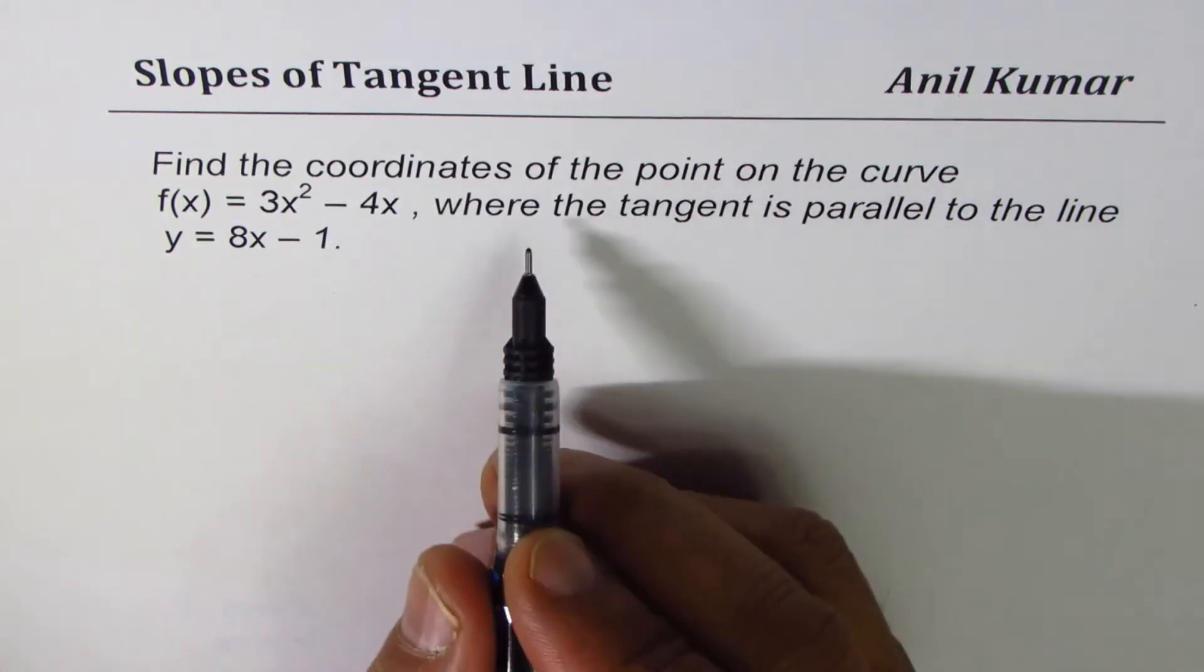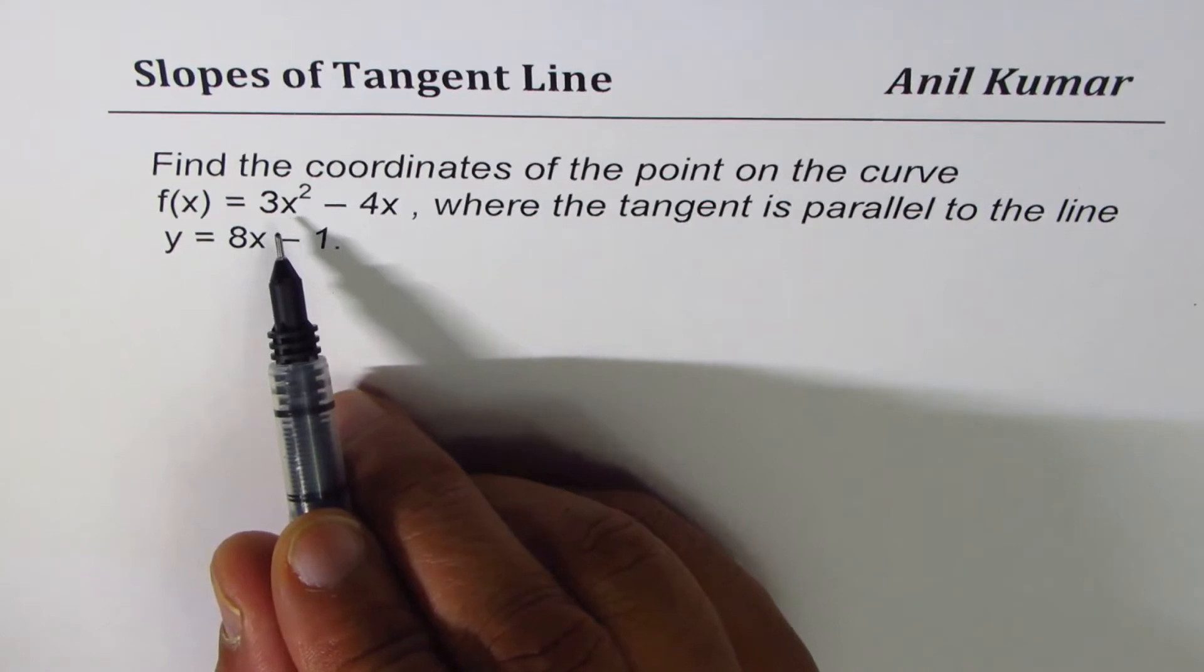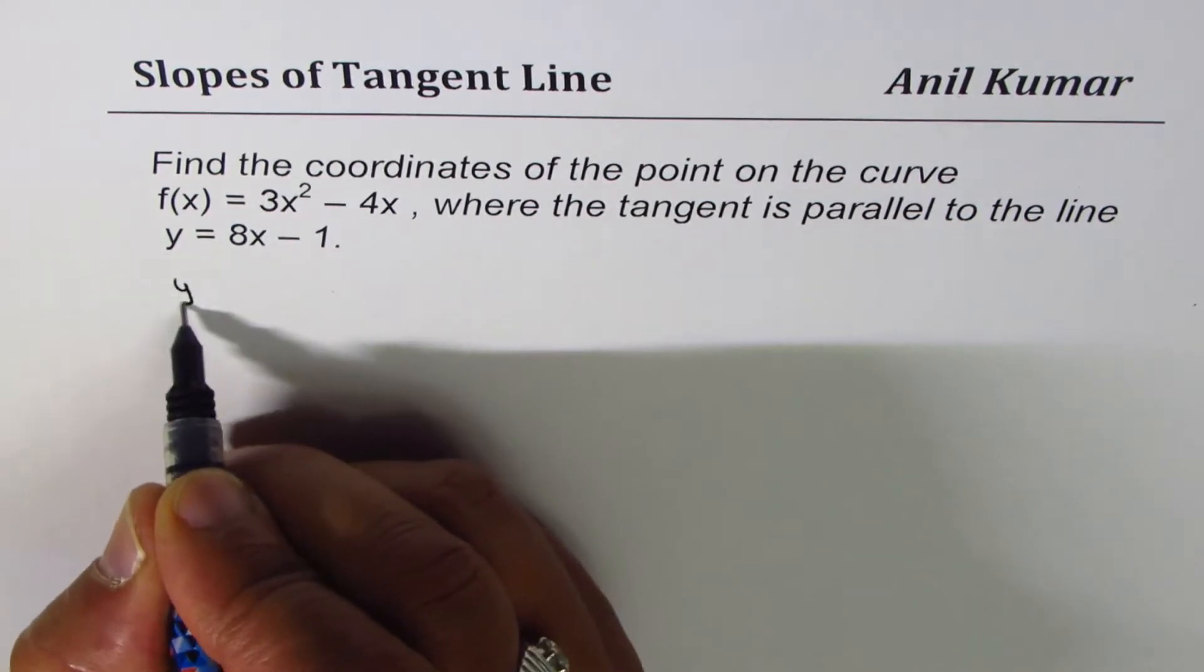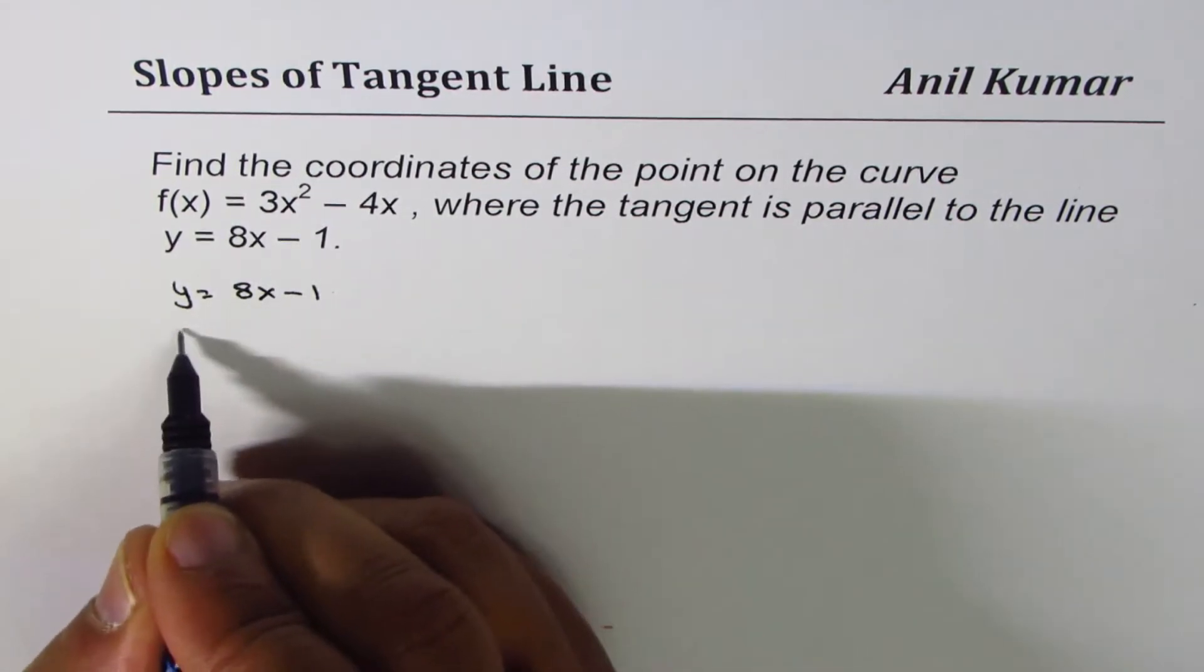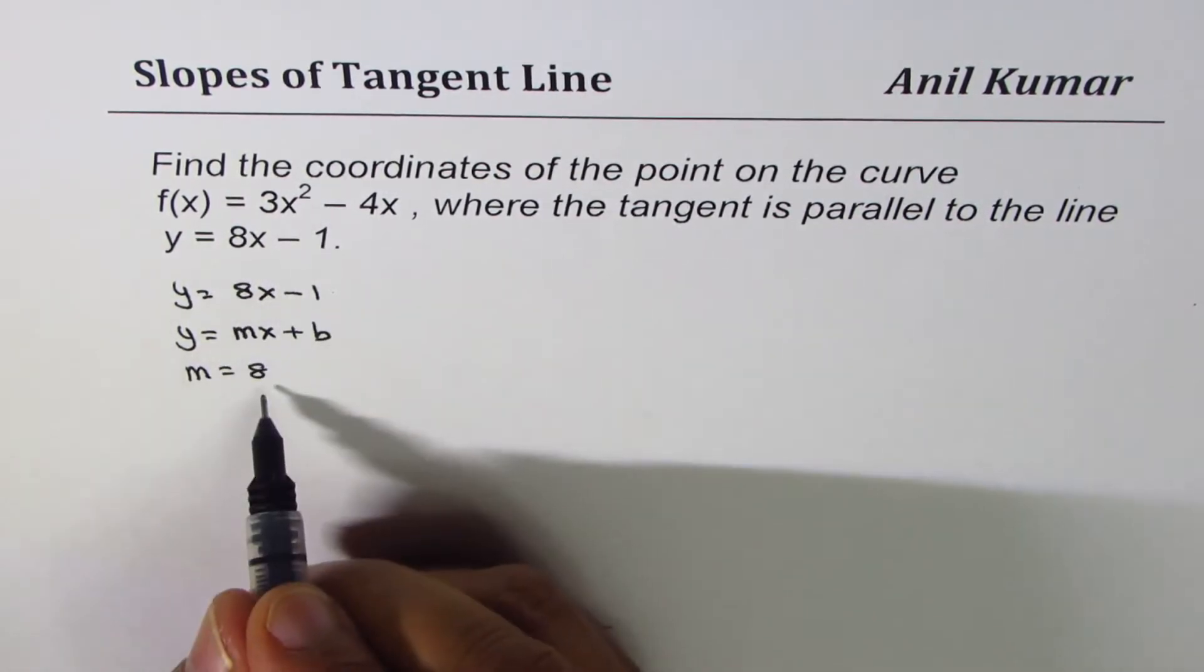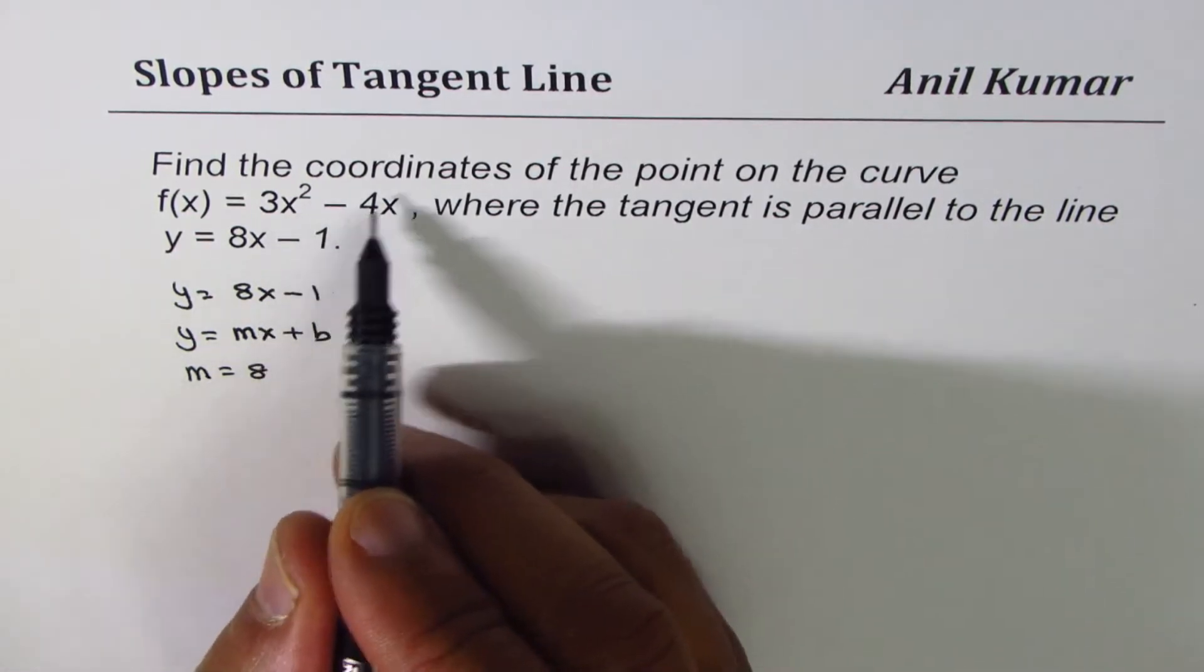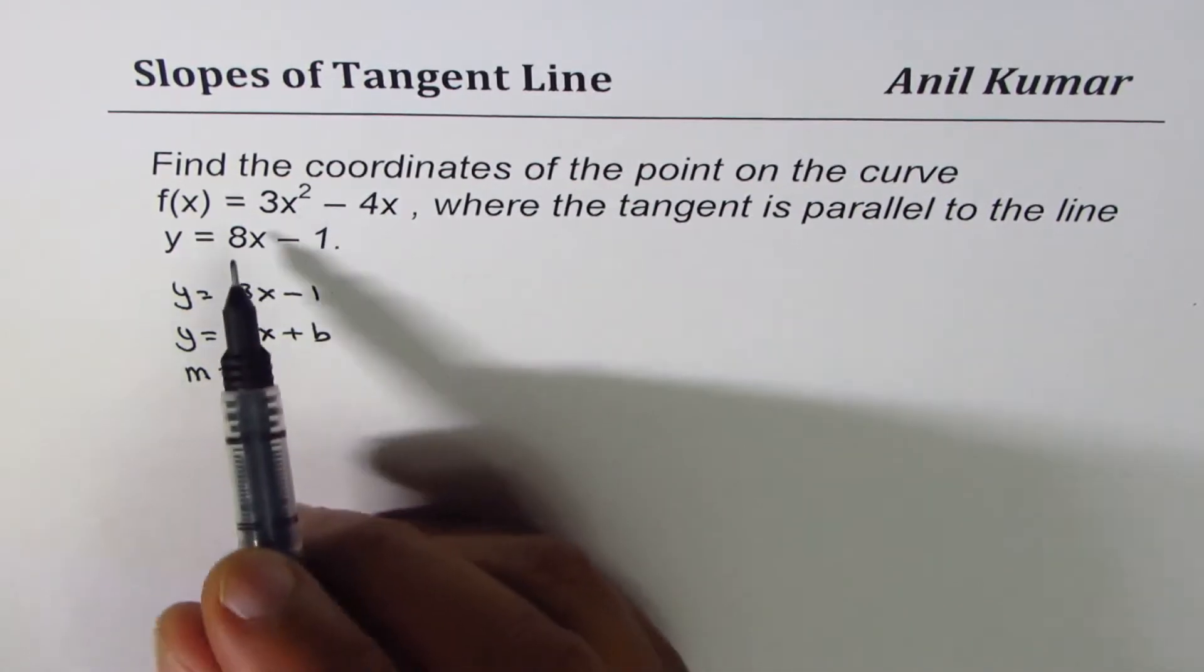Let's find the slope of the required tangent line. When we are given line y = 8x - 1, comparing with y = mx + b, slope m equals 8. So we are looking for a slope of 8 on this function, and we need to find the point.